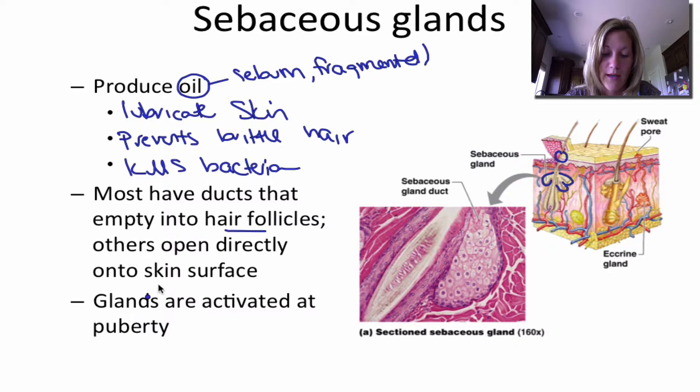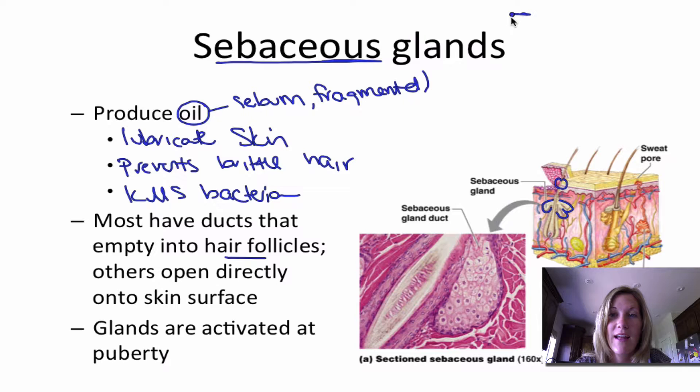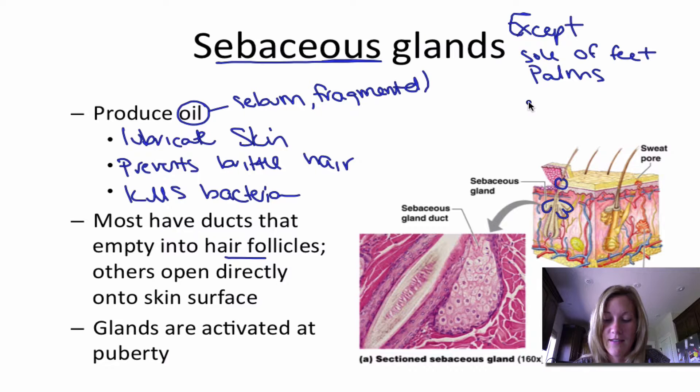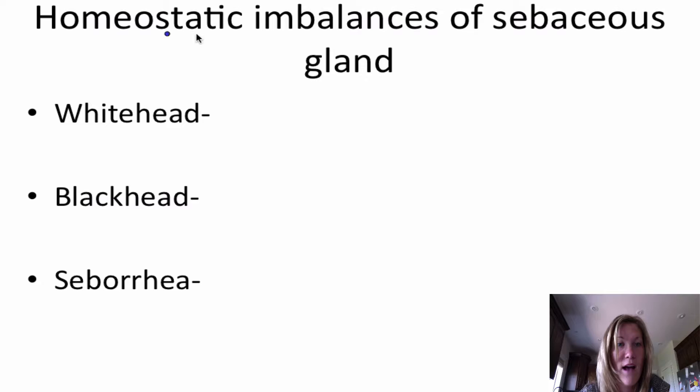These glands are activated at puberty. Sebaceous glands are found everywhere on the body except the soles of the feet and the palms of the hands — but other than that, sebaceous glands are found everywhere else.